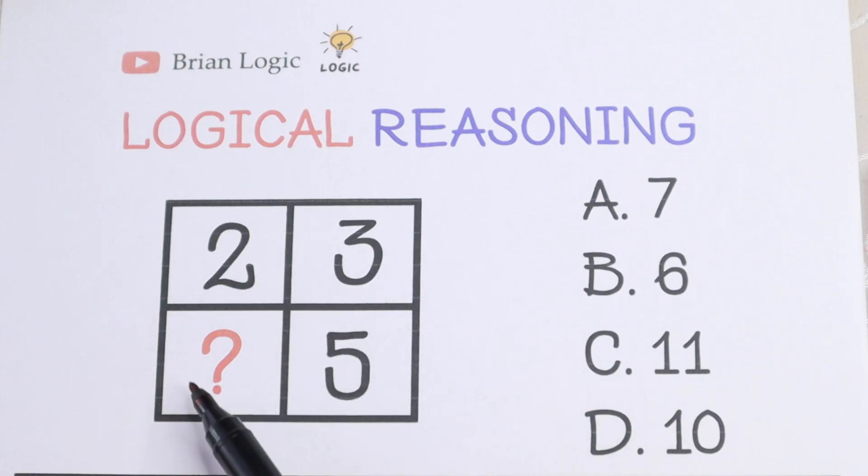We need to find the last box, this box. We have 2, 3, 5 and we need to find the last box. Right here on the right hand side we have a lot of options. We have 7, 6, 11 and 10.